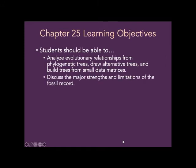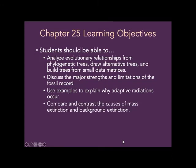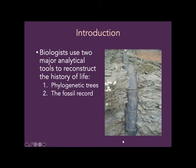You should also be able to discuss the major strengths and limitations of the fossil record, and use examples to explain how and why adaptive radiations occur, and then compare and contrast the causes of mass extinction and background extinction. Because biologists use two major analytical tools to reconstruct the history of life — phylogenetic trees and the fossil record — we're going to be covering both of them in the same lecture. Most of the lecture is about phylogenetic trees and what they mean and how they work, and then the last bit talks about the fossil record and the history of life on Earth.